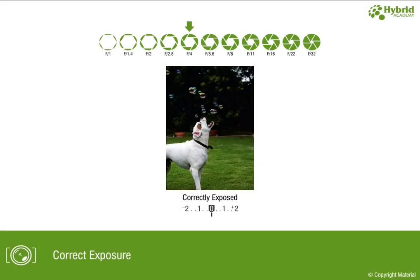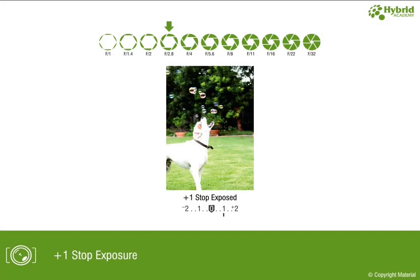Let's review the same picture in terms of correct exposure with aperture. We see the picture as correctly exposed, and an increase in aperture size results in increasing the light falling on the sensor, making the picture overexposed.